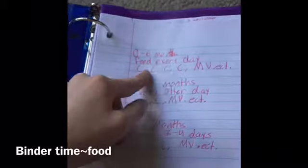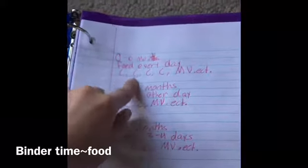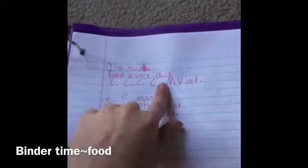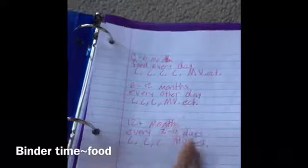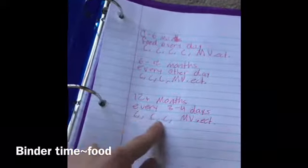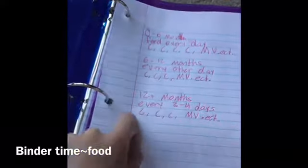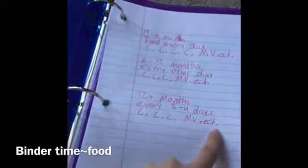So in here, this is his food section. Seriously, is it focused? Yes, okay. We have for zero to six months, you feed them every day, and then what I fed him - calcium, calcium, calcium, multivitamin, etc. And then for six to twelve months, you should feed them every other day - calcium, calcium, multivitamin. And then twelve plus months, every three to four days - calcium, calcium, multivitamin, etc.